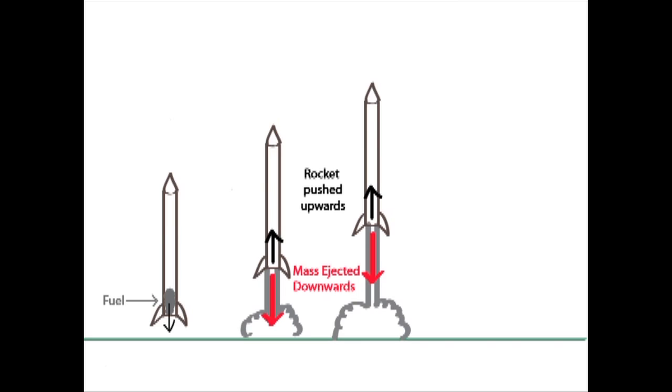To put it in terms of forces, the rocket has to exert some force on the ejected mass to push it downwards, which then results in an equal and opposite reaction force pushing the rocket upwards. And that's it. That's how conservation of momentum, or equivalently Newton's third law, underlies the launching of rockets.